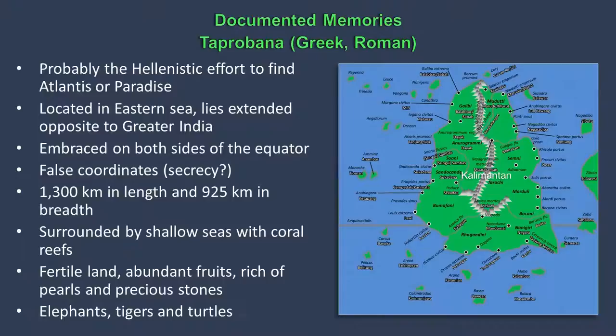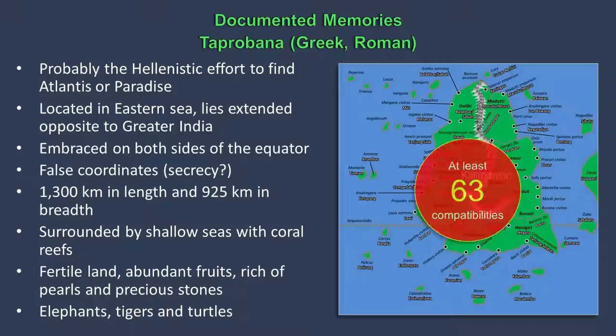The Taprobana was a historical name for an island in the Indian Ocean. It is probably the Hellenistic effort to find Atlantis or Paradise, from about 300 BC. It is described as located in the Eastern Sea, lying opposite to Greater India, and embraced on both sides of the equator. The island is 1,300 km in length and 925 km in breadth, surrounded by shallow seas with coral reefs. The land was fertile, with abundant fruits, rich in pearls and precious stones, and there are elephants, tigers, and turtles. With numerous names of places, rivers, harbors, islands, and mountains described by Ptolemy, I have made a hypothesis that Taprobana is actually the island of Kalimantan, where I have found at least 63 compatibilities.